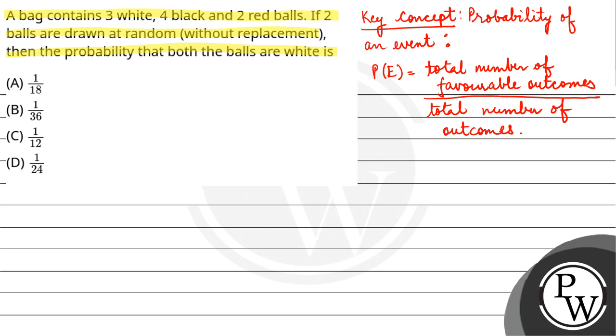So here, what are the favorable outcomes? The two balls are white. The probability is that out of three white balls, two balls both of them are white. And total number of possible outcomes, you have balls: four plus three is seven, plus two, it's nine.